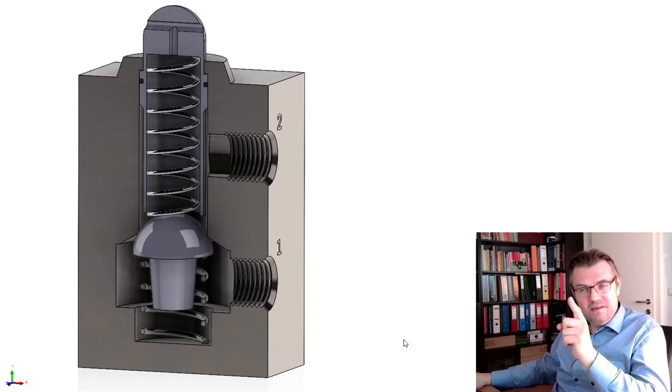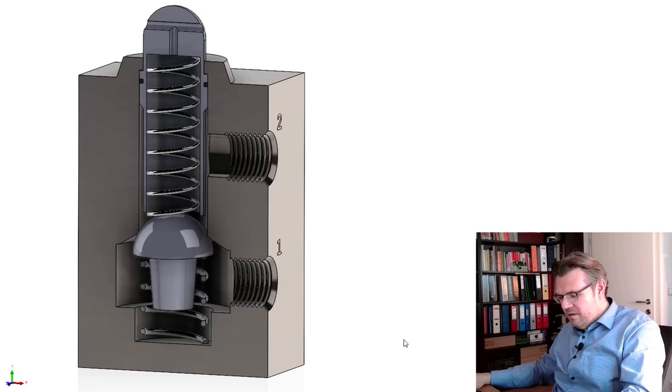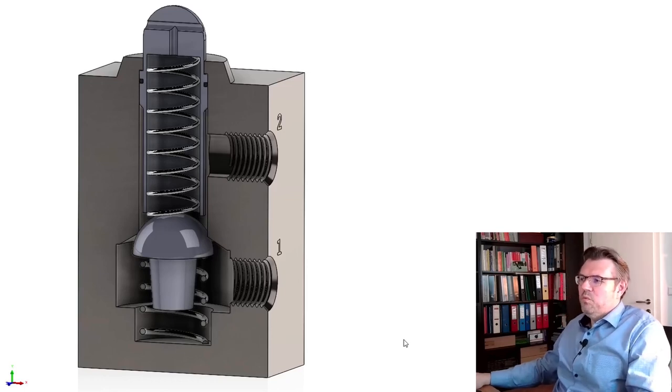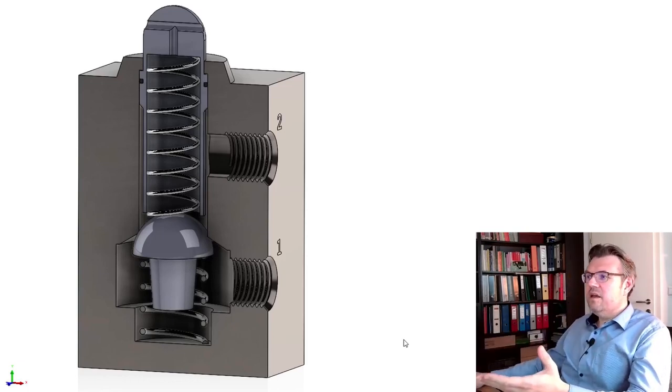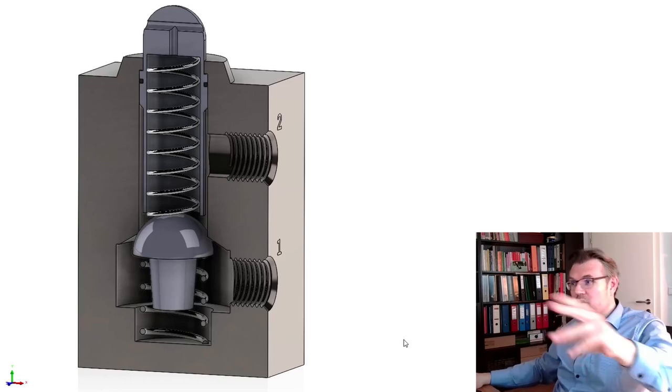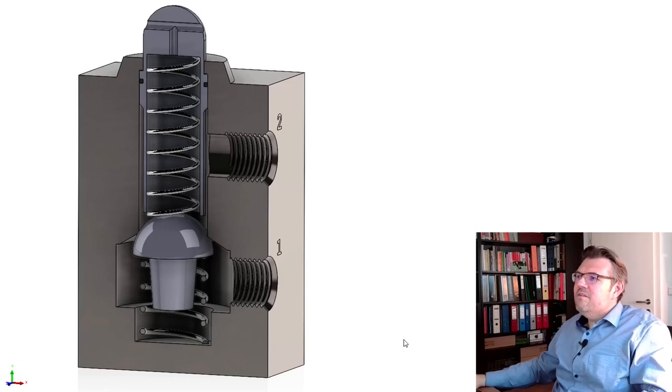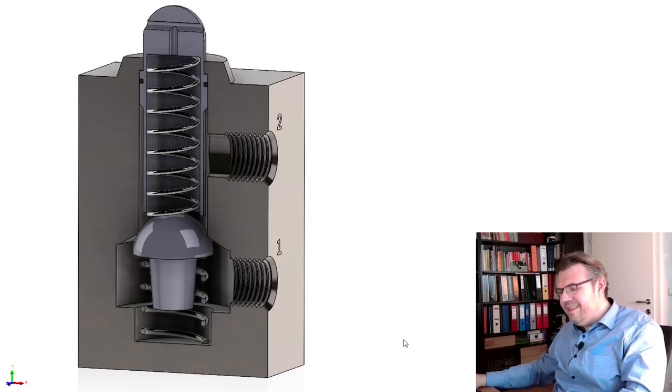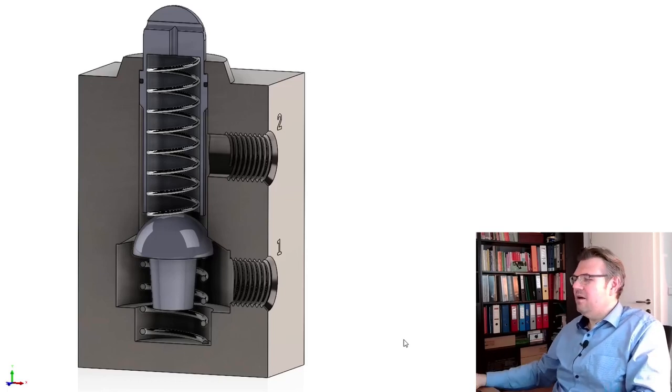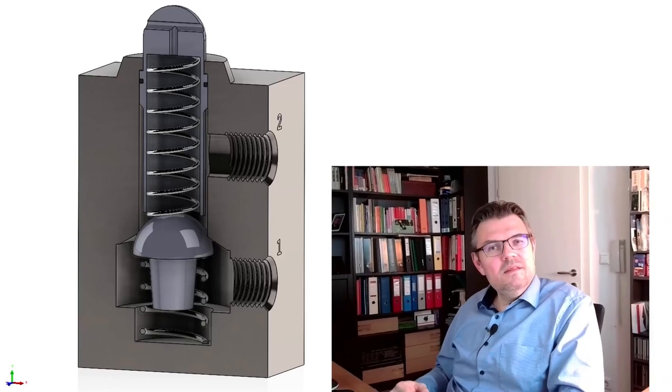And if I release it again, this will go up until it is here blocking again. The spring just lifted this plug up. And 1 is now sealed again. 2 is still sealed. So at 2 I would still have pressure. Because where should it go? And then if this is lifted up even further, here it's open and 2 is now relieved. Pressure of 2 is now relieved. This is how this looks like, how this might look like inside.